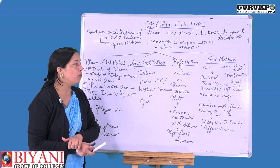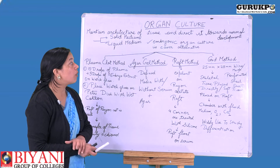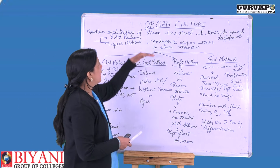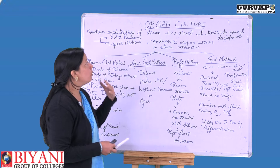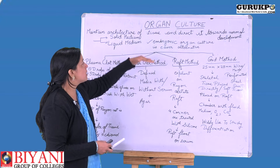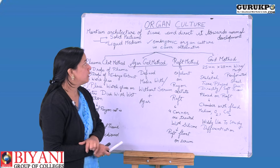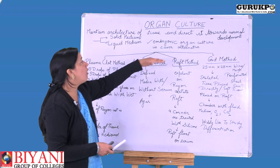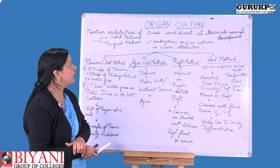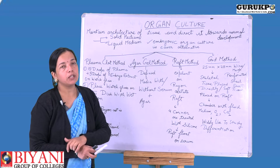Organ culture is generally done in vitro to use the organ for drug studies as well as for organ transplants. We can culture the organ from both adult cells and embryonic cells. However, embryonic organ culture is generally an easier and better technique compared to using adult differentiated cells.